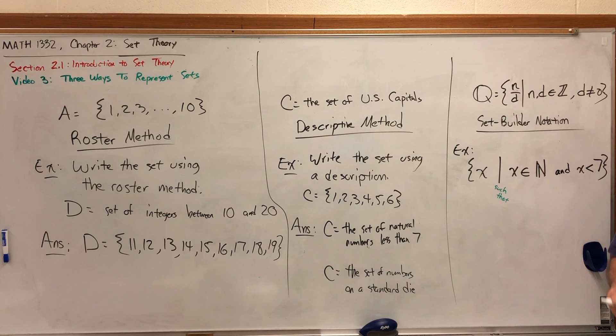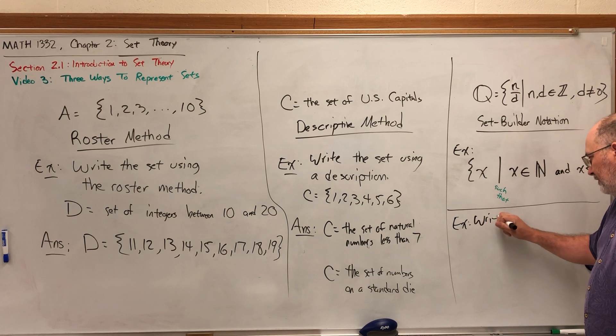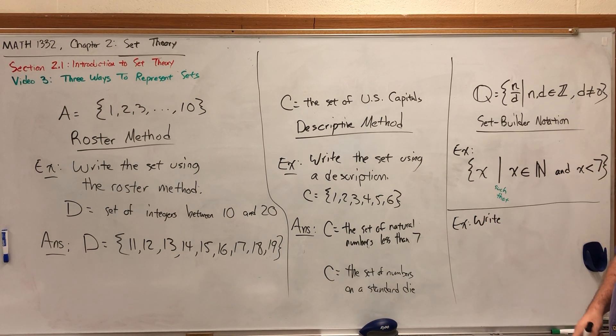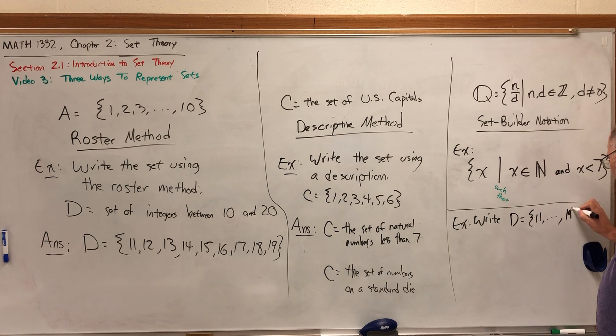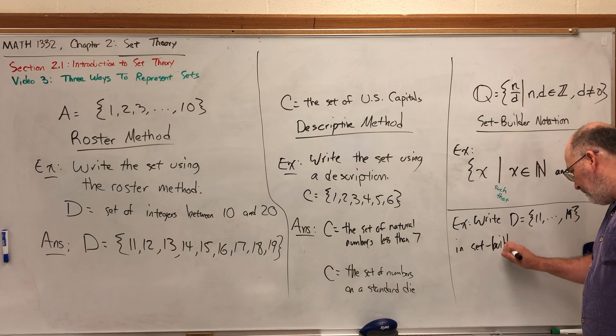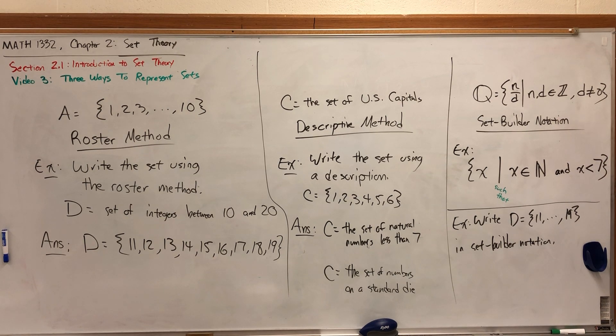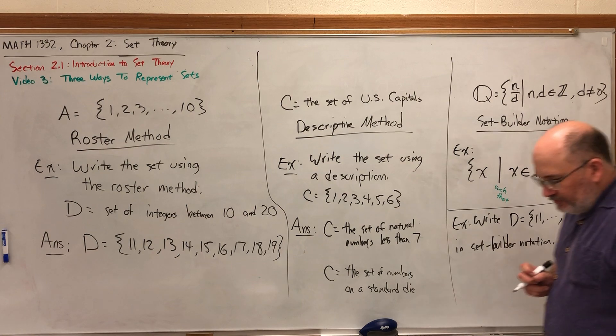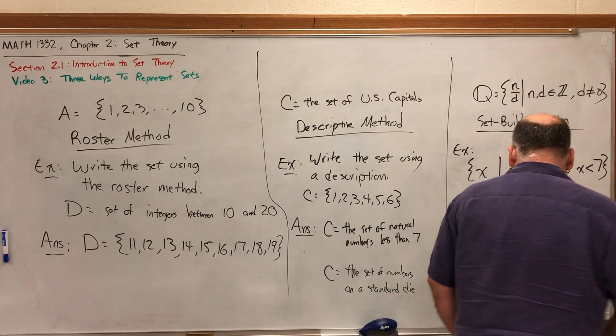Let's take a look at one more example of writing a second set builder notation. For example, write, well let's do set D over there, which was 11 through 19, in set builder notation. Well, how can we describe all the numbers in set D without just listing them? Well, we can say they're greater than 10 and less than 20. That puts them between 10 and 20. So let's start there.